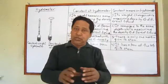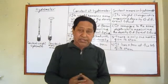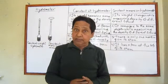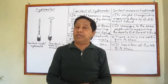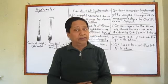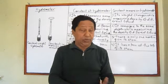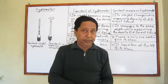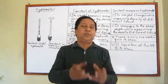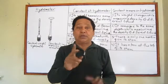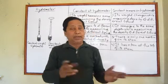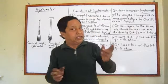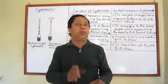A hydrometer is a device used to measure the density of a liquid, and it is based on the principle of flotation. I want to present two different types of hydrometer and the basic differences between them.